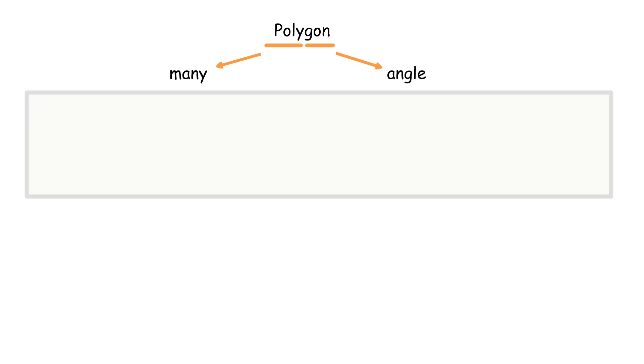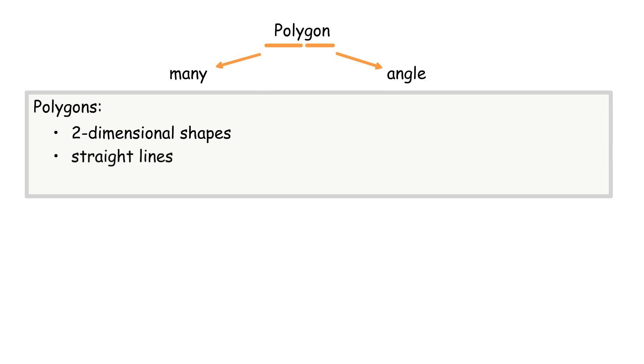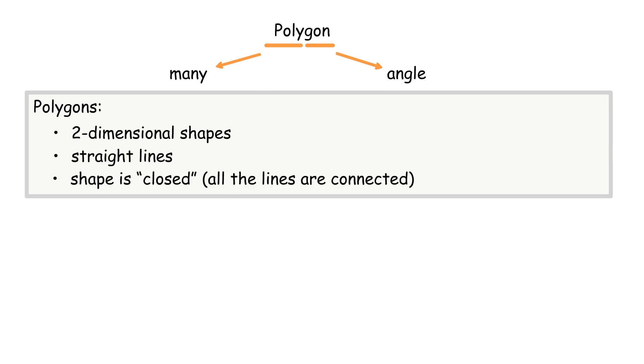Polygons are two-dimensional shapes. They are made of straight lines, and the shape is closed — all the lines are connected.